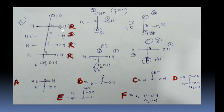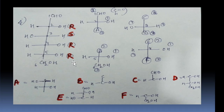We can now name this compound: 2-hydroxy, 3-hydroxy, 4-hydroxy, 5-hydroxy, and 6-hydroxy — so 2, 3, 4, 5, 6-pentahydroxy. The chain length is 6, making it a hexenal. So this is all about the stereochemistry R/S nomenclature of these questions, as shown in the last video. Thank you, and please solve the questions again.